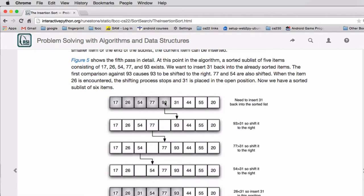Then it compares the 31 to the next value, which is 77. And it sees, well, that's also bigger, so it moves it over. And then it compares the 31 to the 54 and that's also bigger, so it moves it over.